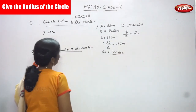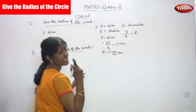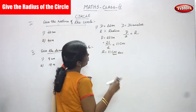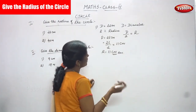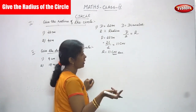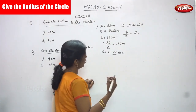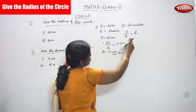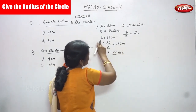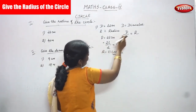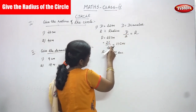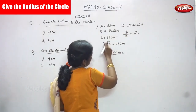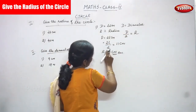I repeat once again: D is equal to 22 cm. D means diameter. R is equal to radius. What is the formula of radius? D by 2 is equal to R. D is equal to 22 cm, so you have to substitute the value of D here — 22 divided by 2.